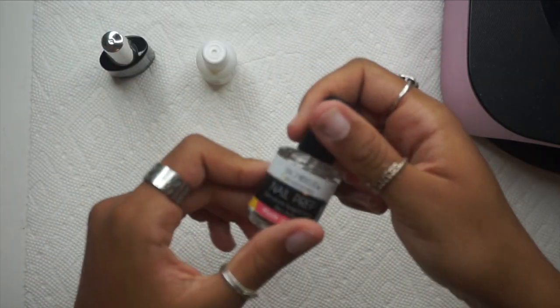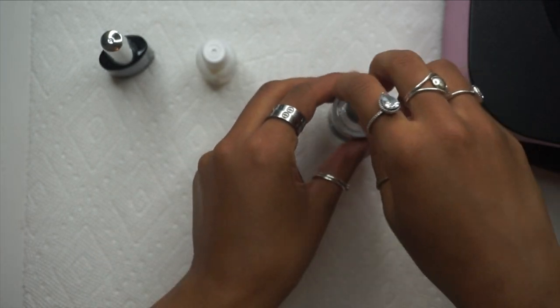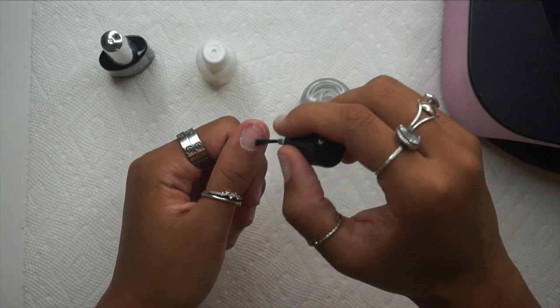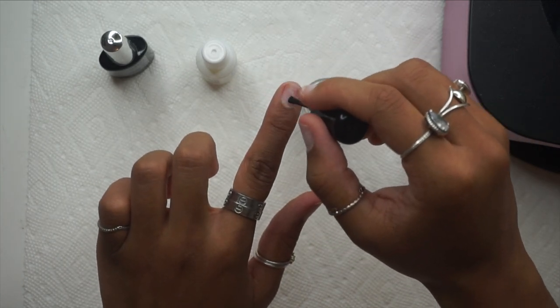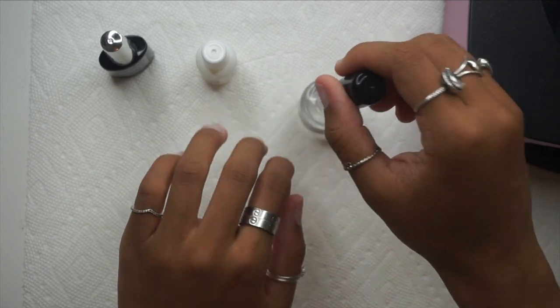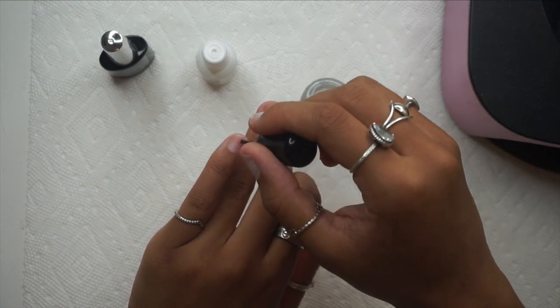After wiping that off, I'm going in with some nail primer/dehydrator. I purchased this one from Amazon—it's super cheap but it works for me. I think it was like five bucks, four bucks, something crazy. I'll have the link for it down below.